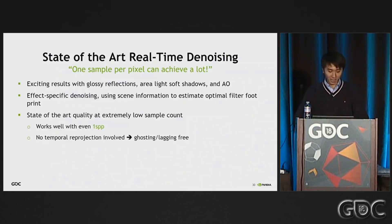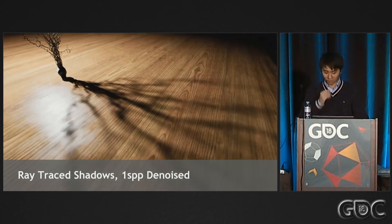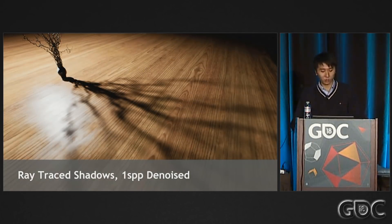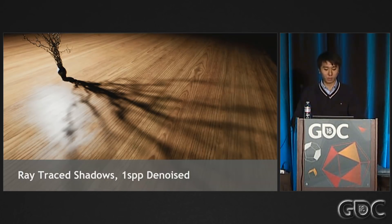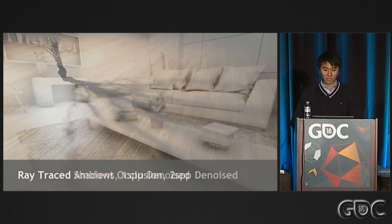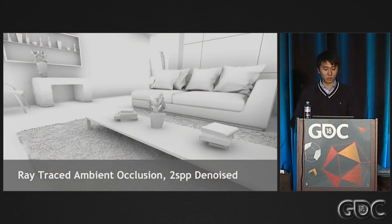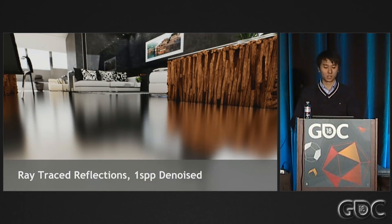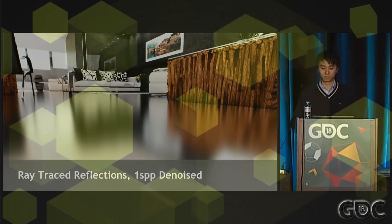Let's look at some images. This is ray-traced soft shadow with our denoiser applied using only one ray per pixel. And this is ray-traced AO with two samples per pixel. And this is ray-traced glossy reflection with one sample per pixel.